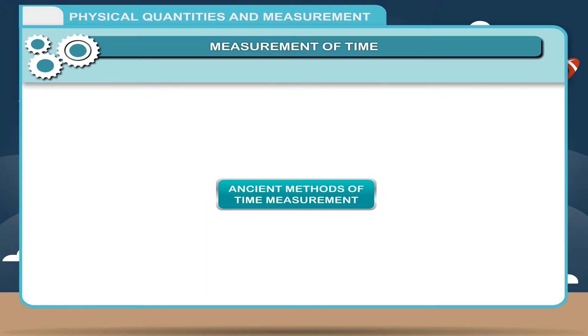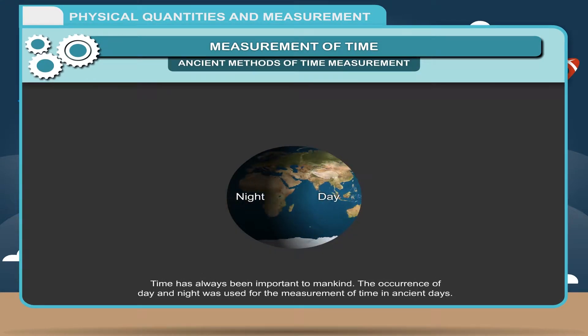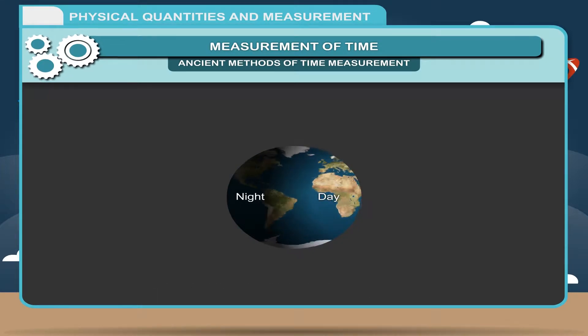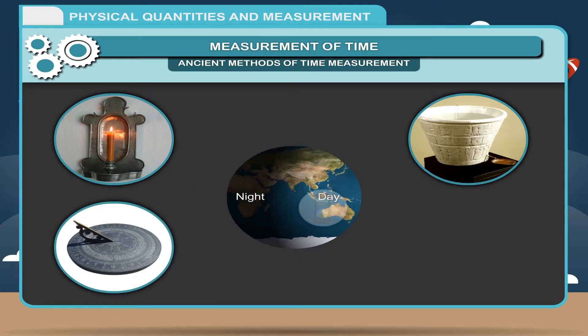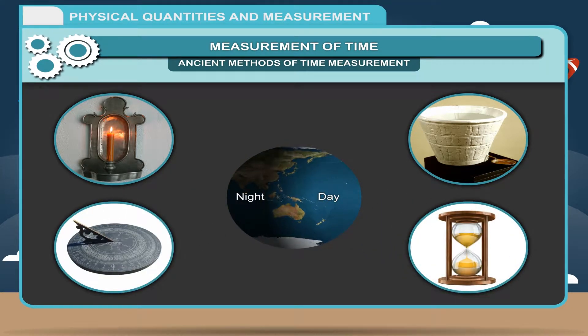Ancient Methods of Time Measurement. Time has always been important to mankind. The occurrence of day and night was used for the measurement of time in ancient days. With the passage of time, a candle clock, a water clock, a sundial, a sand clock, etc. were discovered for more accurate measurement.